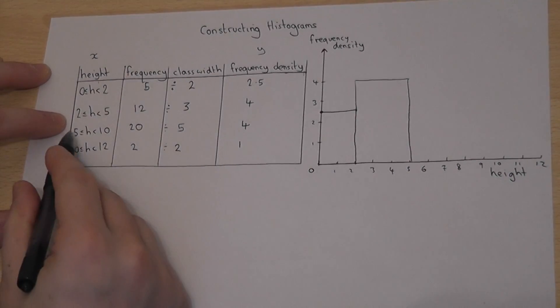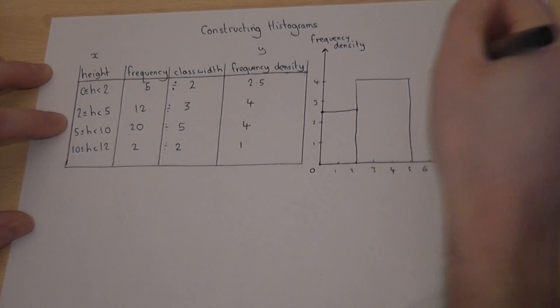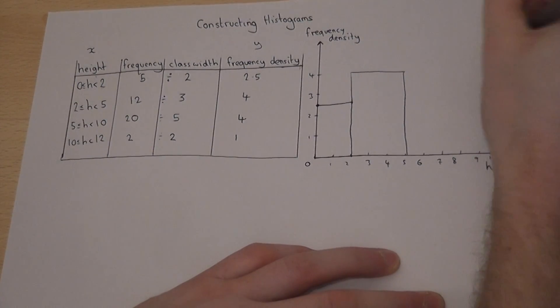The third bar, between 5 and 10, also goes as high as 4. So up to 4, across.